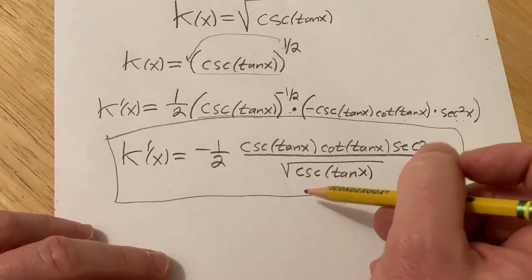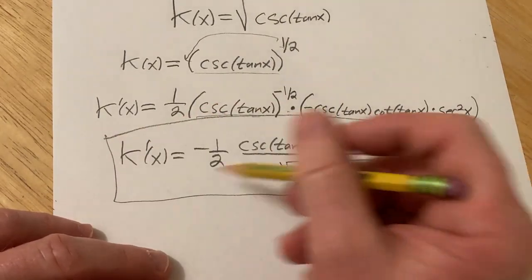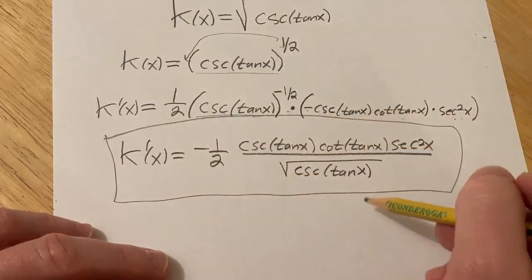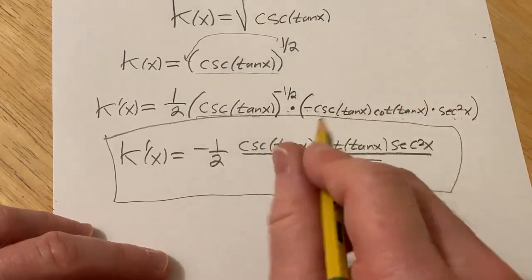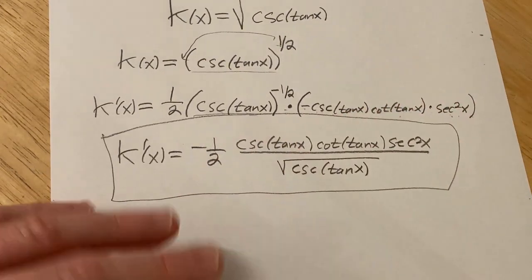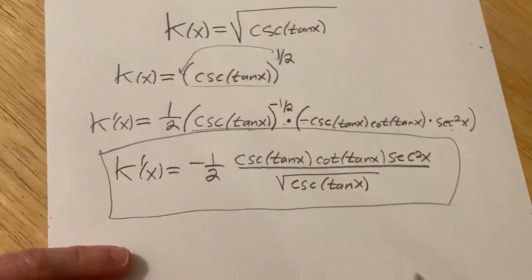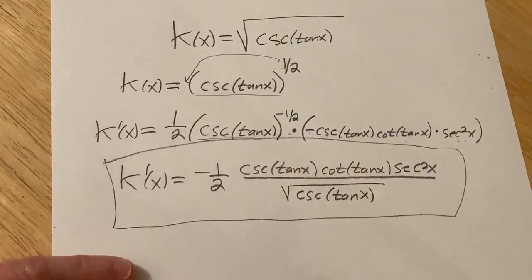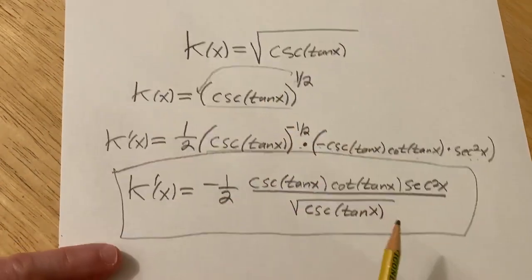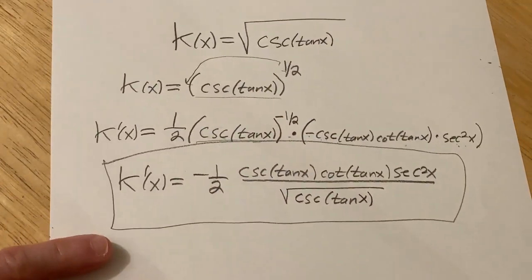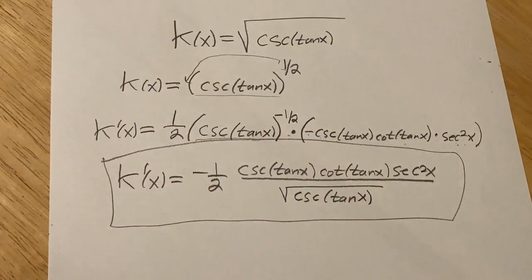And now we're going to find the second derivative — no I'm kidding, that would be really messy. Kind of an interesting problem. Not really tough, but just a good exercise in the chain rule, and of course you have to know some of the formulas for the derivatives. I hope this has been helpful to someone. Good luck.